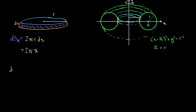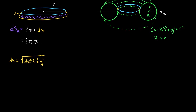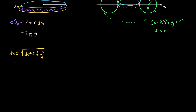Since we're integrating with respect to x, we're going to get ds in terms of dx. So ds equals the square root of dx² plus dy². Since we want to integrate with respect to x, we're going to factor dx² out of this radical. So we'll have ds equal to the square root of 1 plus (dy/dx)², all of that, times dx. We need to find what the derivative of y is with respect to x.